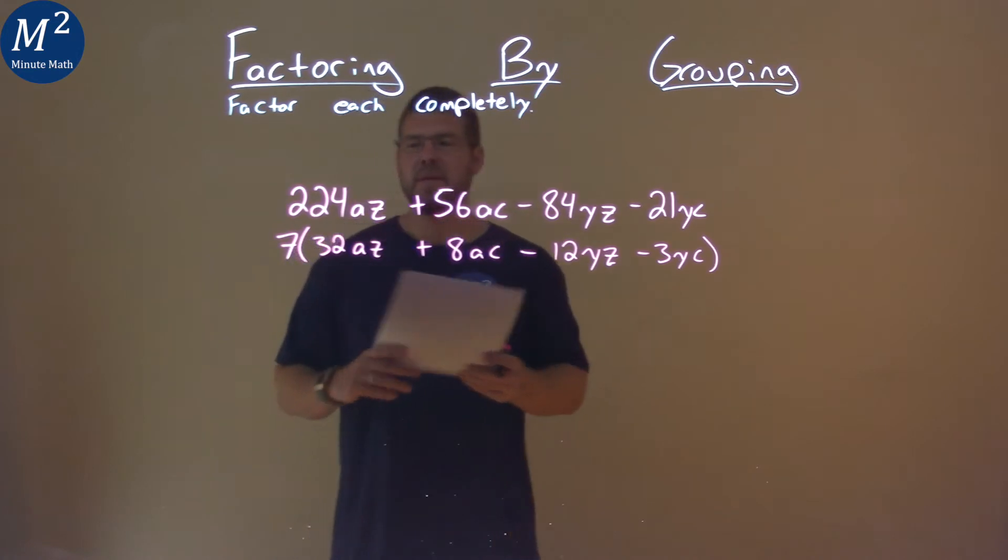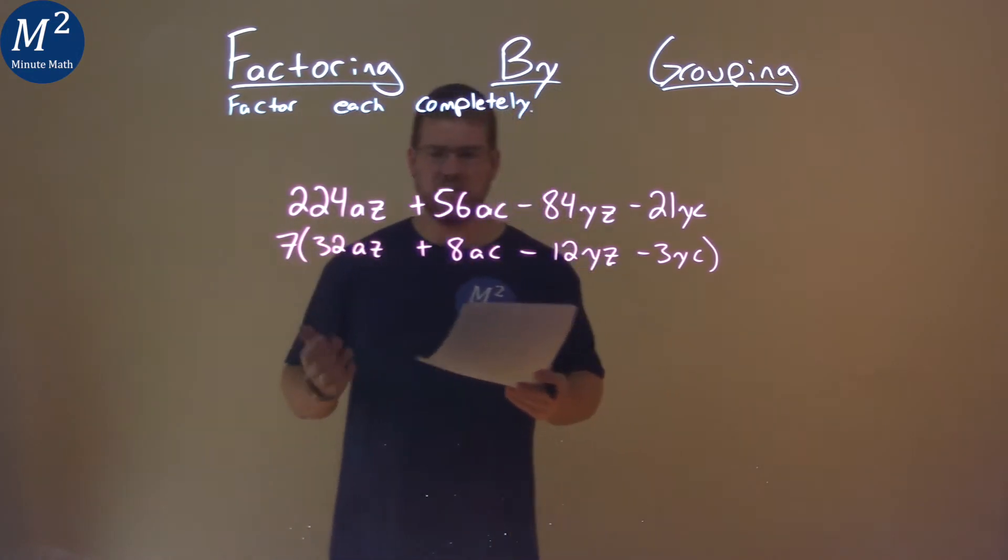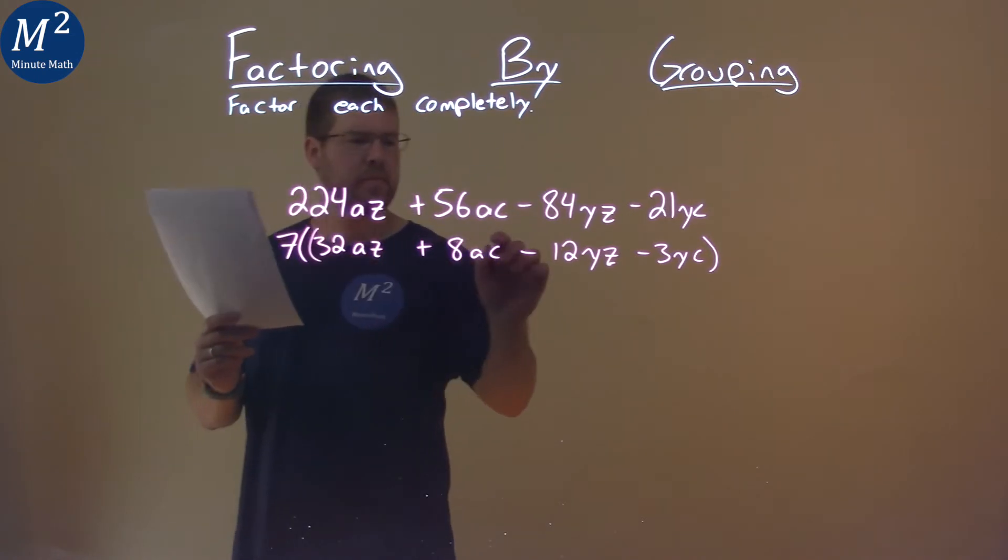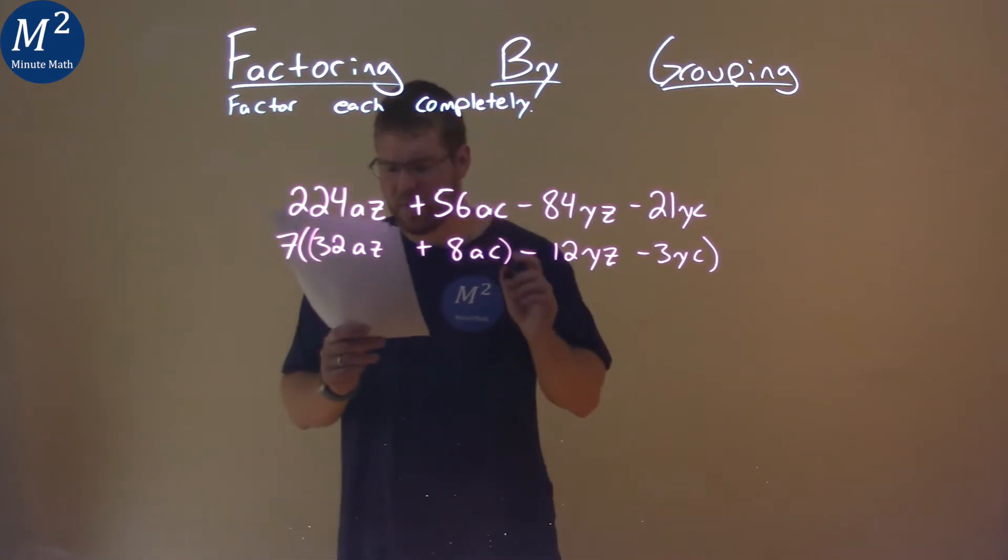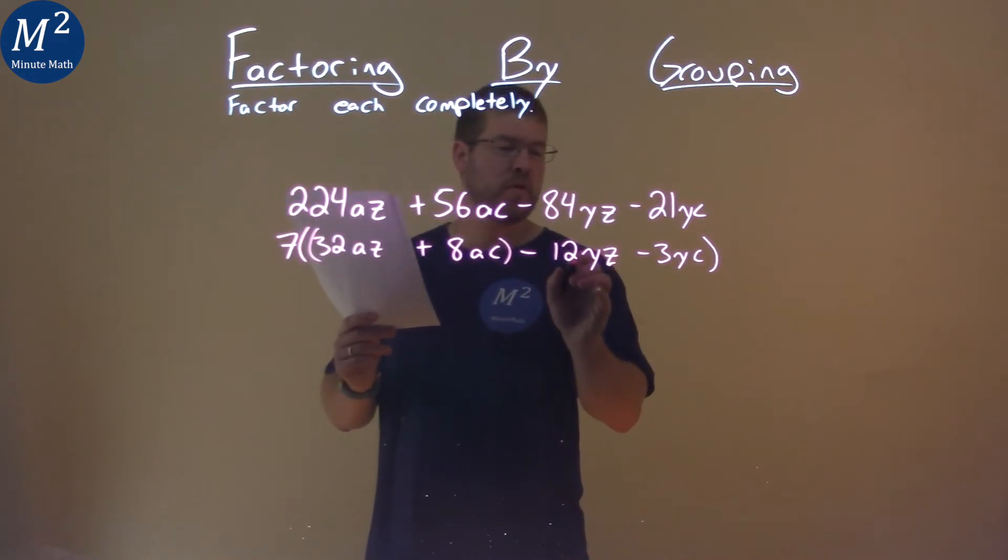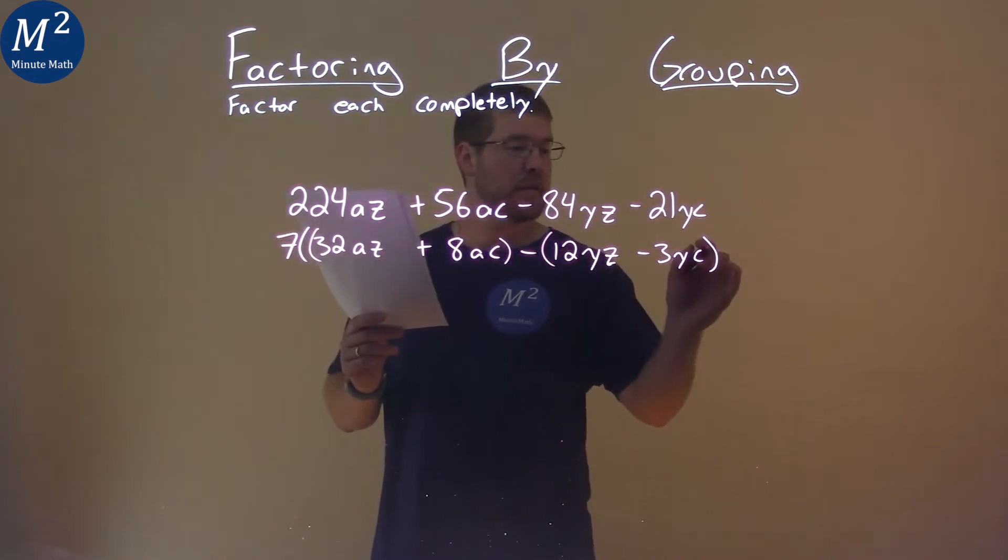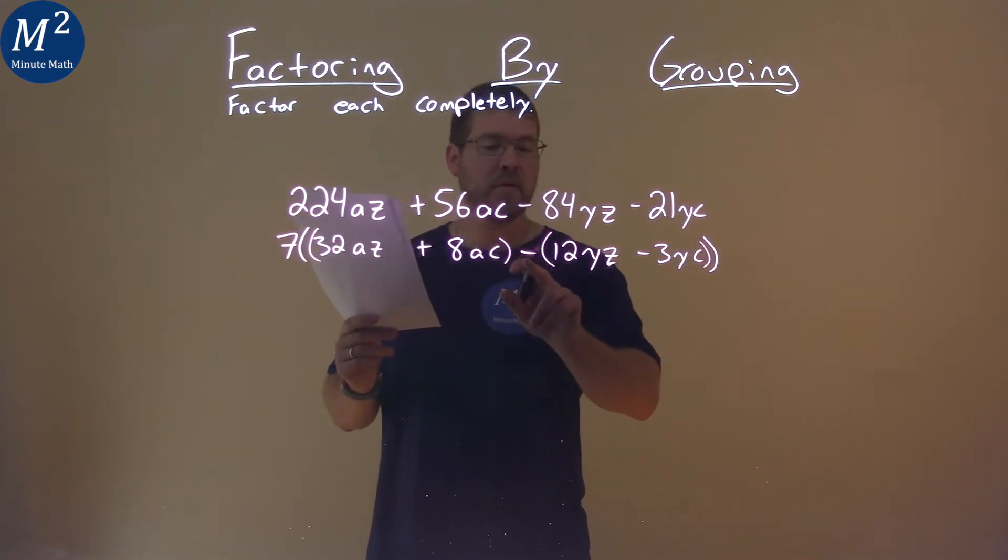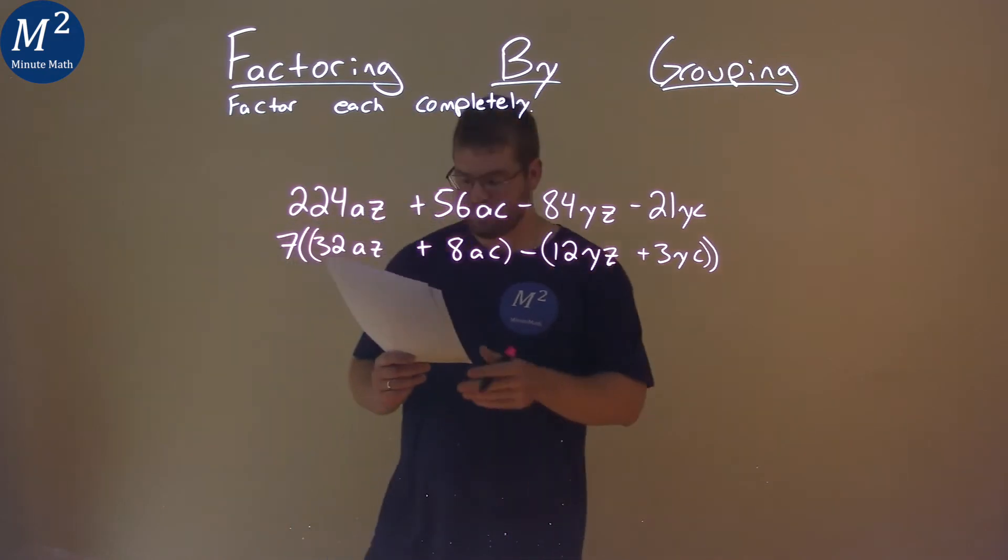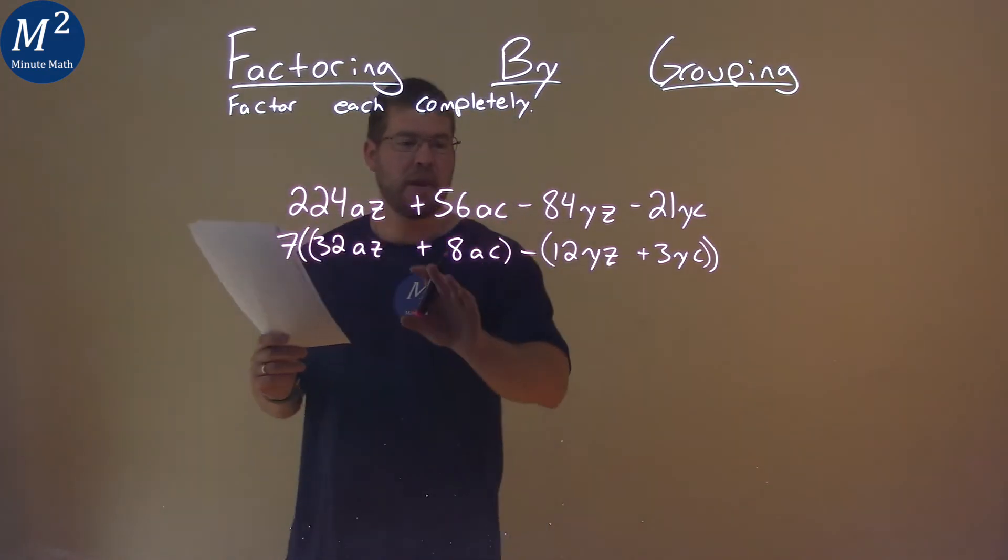By pulling out a 7, smaller numbers are a little easier to see and deal with. So let's group the first two terms here and the second two terms. Now, the second two terms is going to be tricky. That minus sign is only to the 12YZ. By putting a second round of parentheses here, I'm now saying that minus sign has to apply to both parts. So to counteract and make sure when it is applied that this is a minus 3YC, make that a plus sign now. All right. So now we have it set up like this.